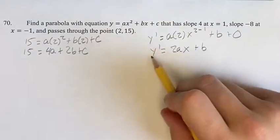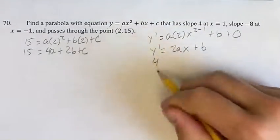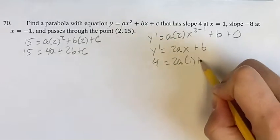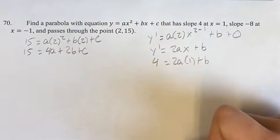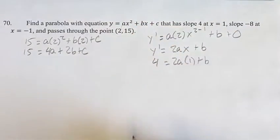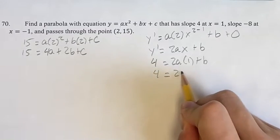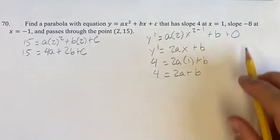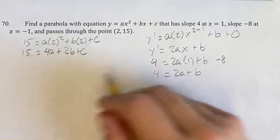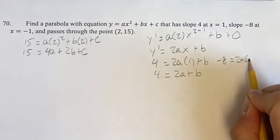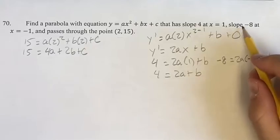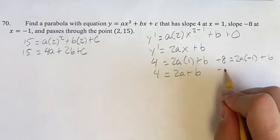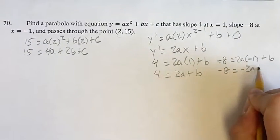We're told that the value of the derivative is 4 when x equals 1. Plugging in 1 for x and 4 for the slope, we get 4 equals 2a plus b. We're also told it's negative 8 when x equals negative 1. Plugging in negative 1 for x and negative 8 for the slope, we get negative 8 equals negative 2a plus b.